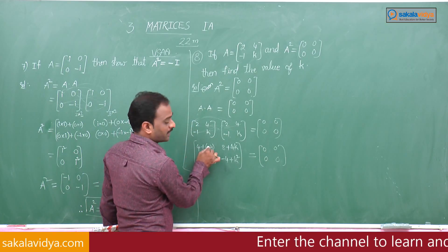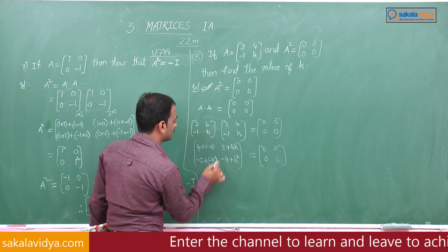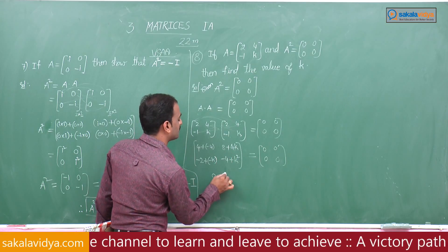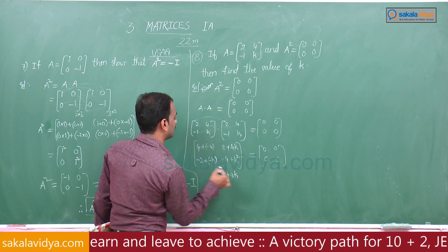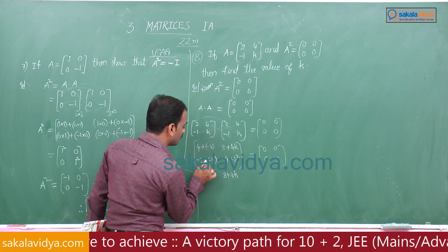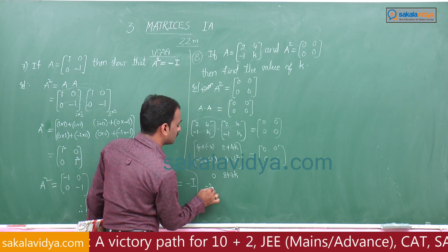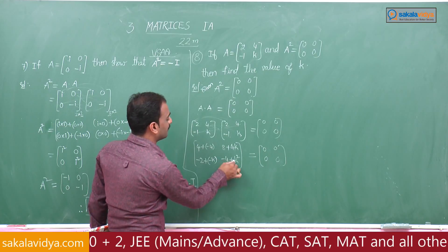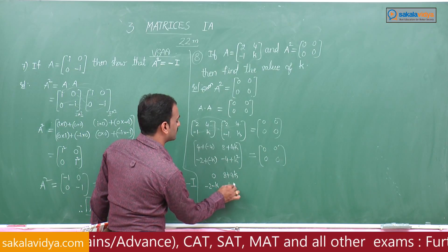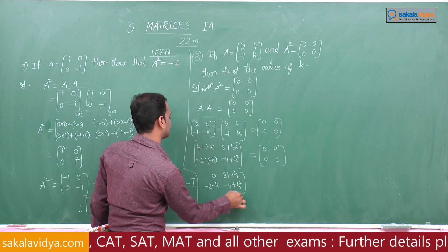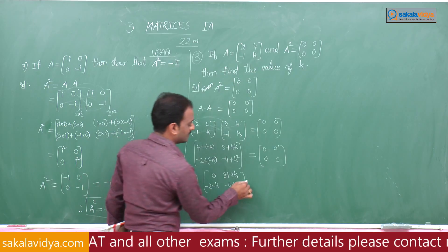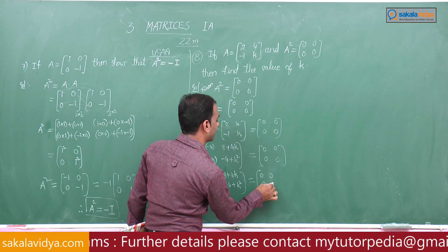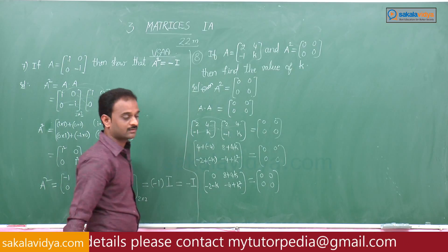So the resulting matrix is [[0, 8+4k], [-2-k, -4+k²]], which equals [[0, 0], [0, 0]]. The first element 4 - 4 equals 0, which checks out. Second element: 8 + 4k. Third element: -2 - k. Fourth element: -4 + k² all equal to zero.